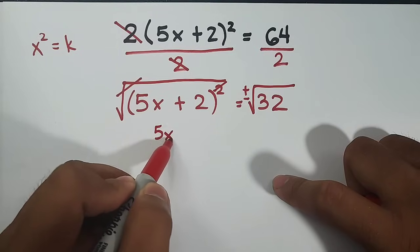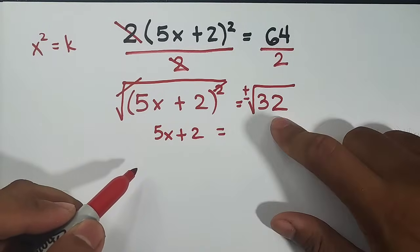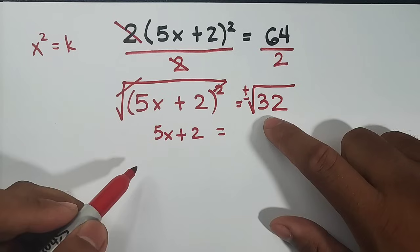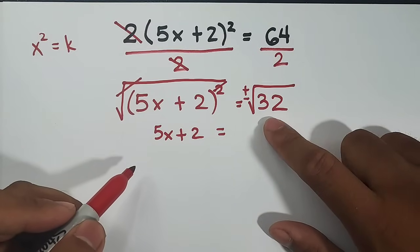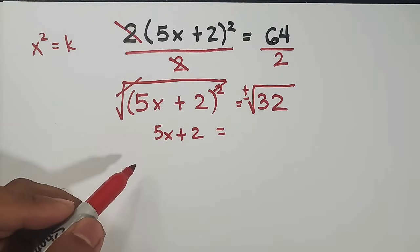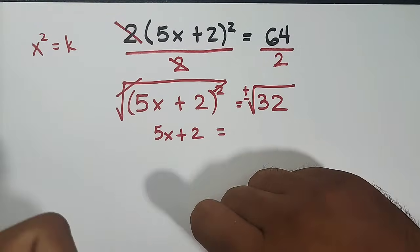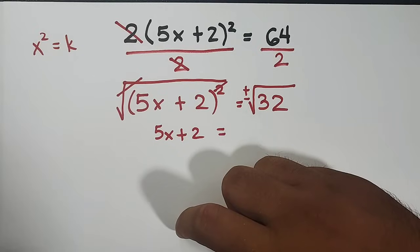So what we have here is 5x plus 2 is equal to, 32 is not a perfect square. Okay, 32 is not a perfect square. So what we need to do is to extract the square root of 32 by factoring it out wherein one of the factors must be a perfect square. So let's think about it.